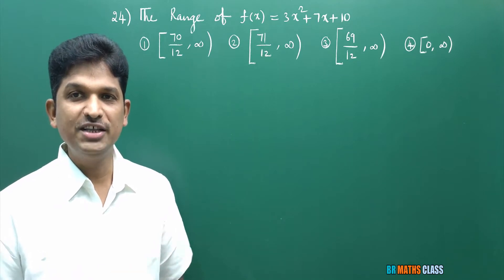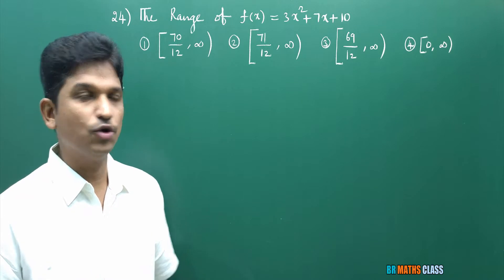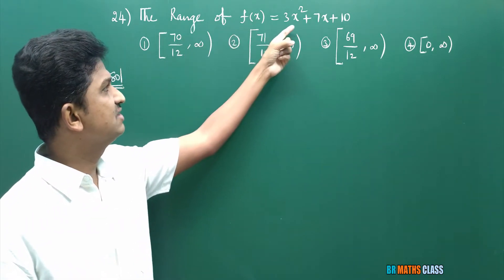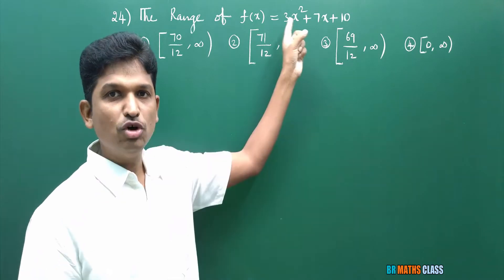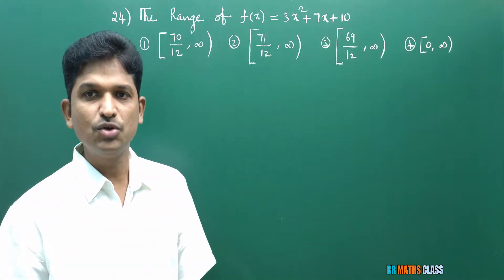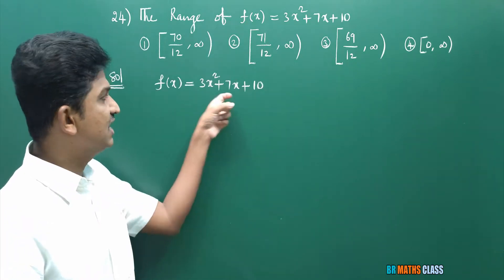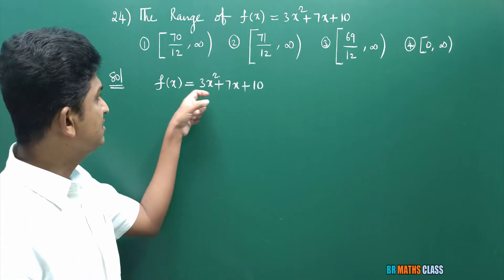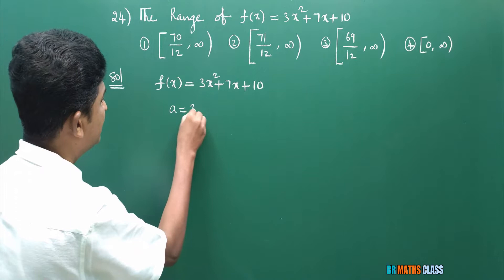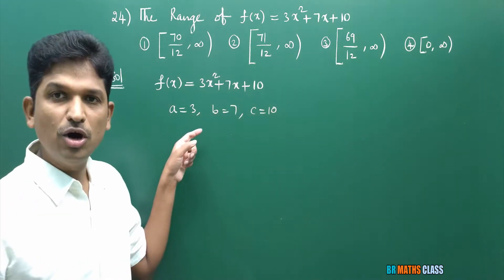This is question number 24. We need to find the range of the function F of X equal to 3X square plus 7X plus 10. You observe this function — it is in the form of AX square plus BX plus C. So I will consider the given function. F of X is 3X square plus 7X plus 10. In this, A is 3, B is 7, C is 10.